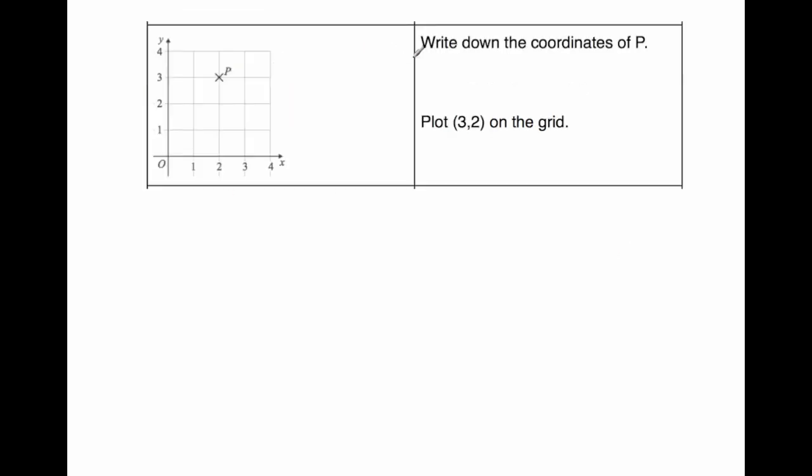Okay, our next question. Our next question, it's a coordinates question, and the question says, write down the coordinates of the point P. So here we've got the point P, as you can see it's two along the corridor, three up the stairs, so the coordinates would be two, three, like so, and make sure you put your brackets around it.